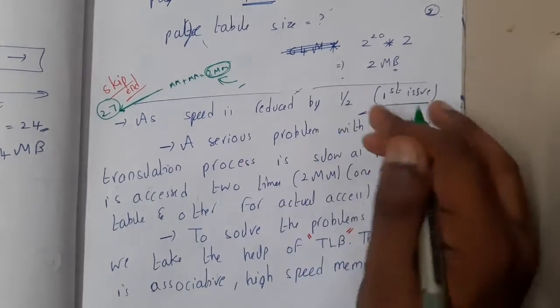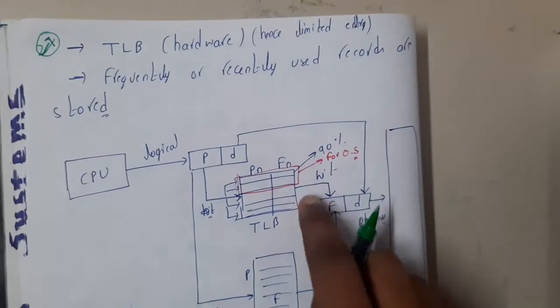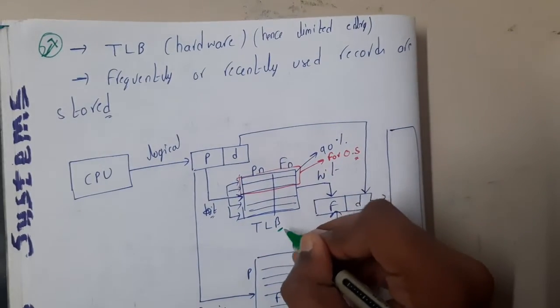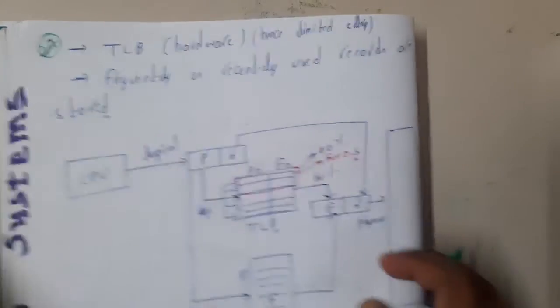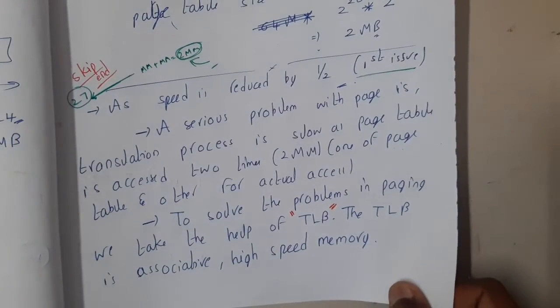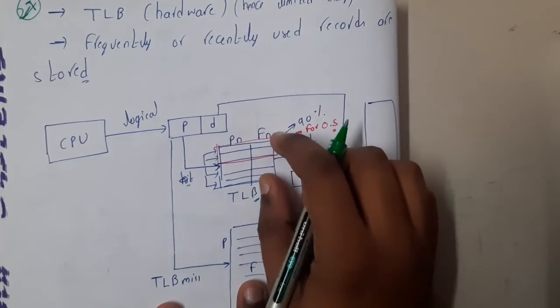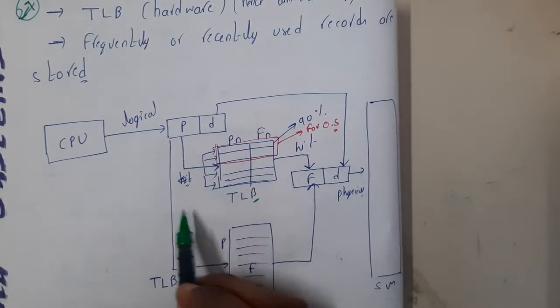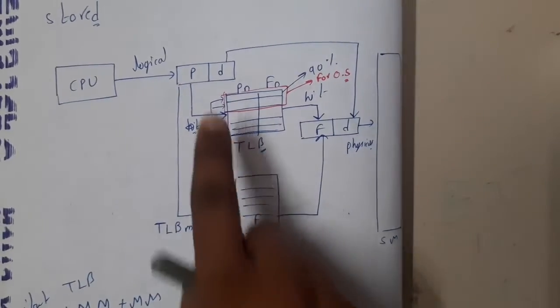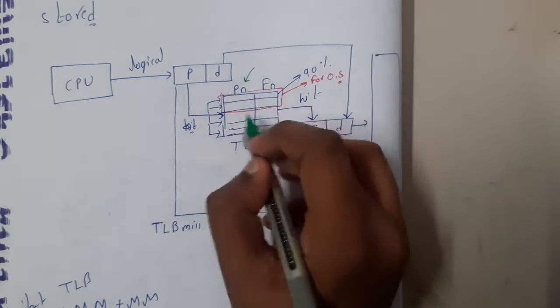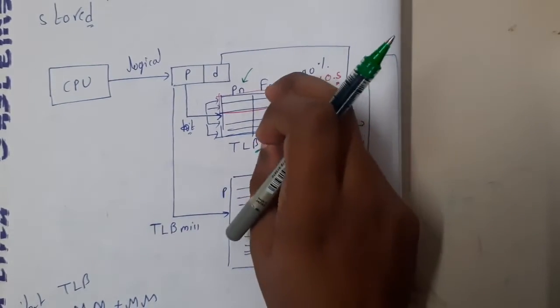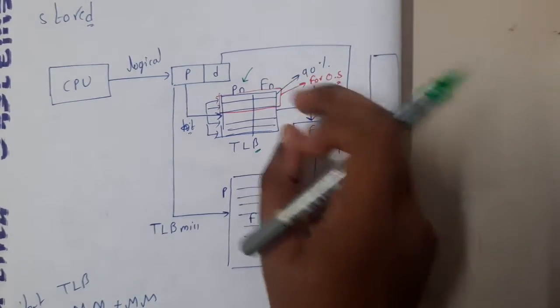To resolve the speed problem, we are going to add a new structure called TLB — Translation Look-ahead Buffer. It is a hardware component that we place in between. Before going to the page table, we send our request here to check whether the particular page is already in it. It is something like a cache — really small, storing only a few pages and frames.